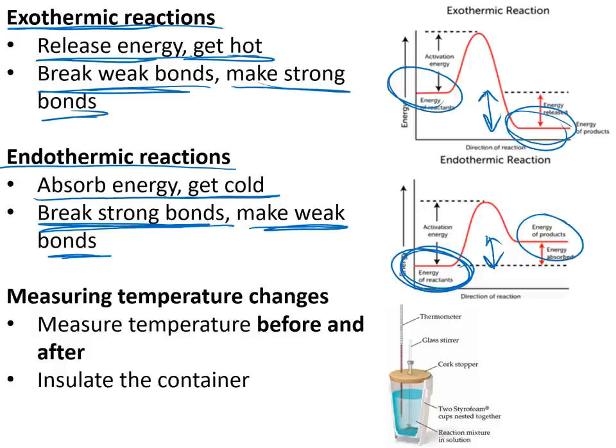We can tell whether a reaction is endothermic or exothermic by measuring the temperature before and after — if it goes up, it's exothermic; if it goes down, it's endothermic. When doing this, make sure you have an insulated container so you're not gaining or losing heat from the surroundings.